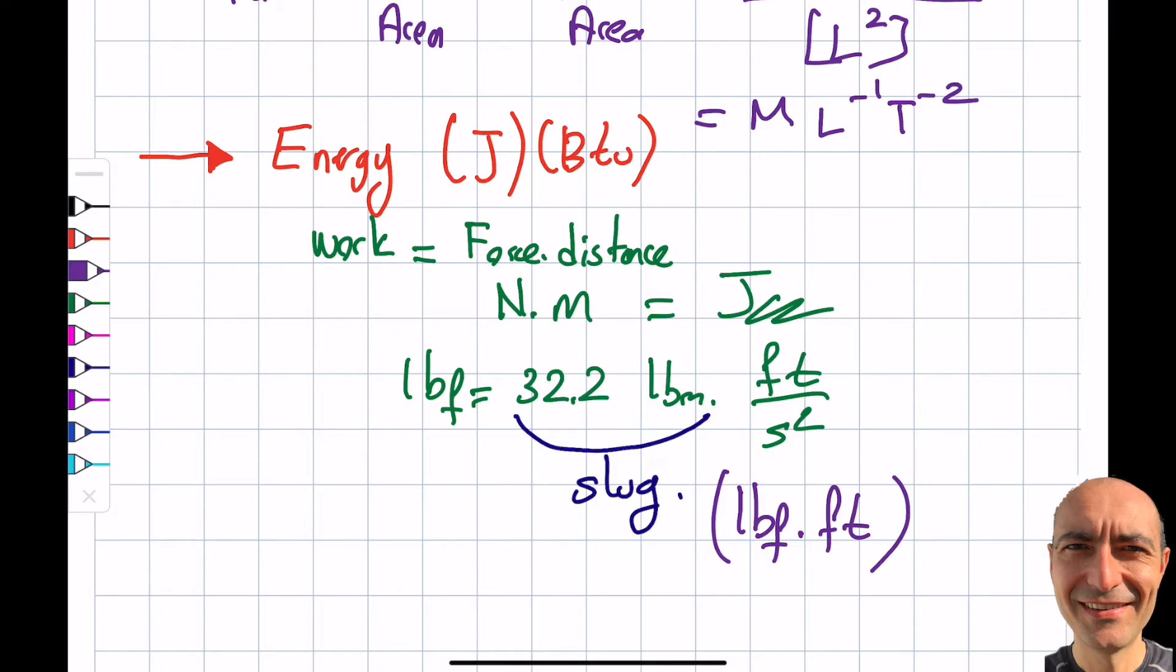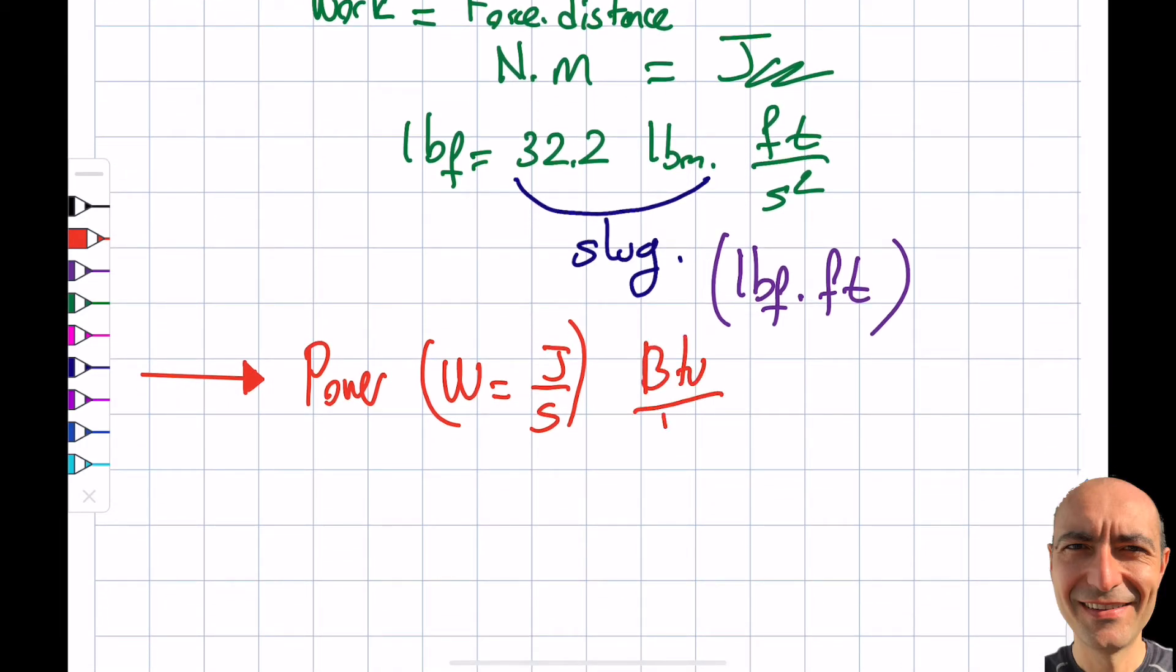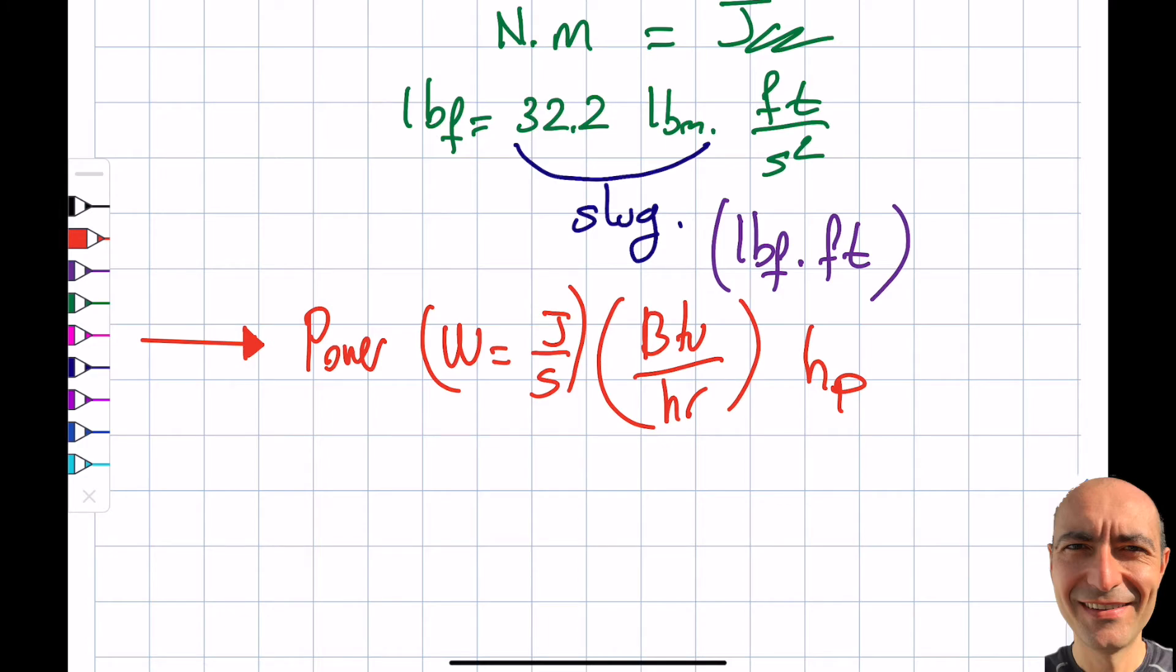Another very important thing that will definitely confuse us is energy versus power. Power is Joules per second in SI. In British gravitational sometimes it's called BTU per hour—you can see this in air conditioning units. But also you see horsepower, how powerful the car is. You know, you deal with it. I want to talk about horsepower for a minute. It's interesting.